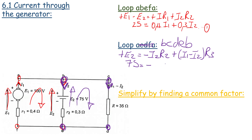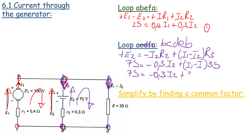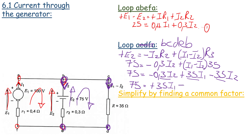Substituting: 75 = -0.3·I2 + (I1 - I2)·35. Expanding the bracket: 75 = -0.3·I2 + 35·I1 - 35·I2. Combining the I2 terms: 75 = 35·I1 - 35.3·I2. We call this equation 2.